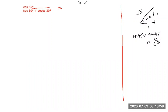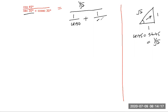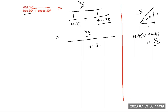So it's 1/√2 divided by (sec 30 plus cosec 30). Secant 30 is 1 by cos 30. Cosecant 30 is the reciprocal of sin 30. Sin 30 is 1/2, so cosec 30 equals 2. Cos 30 is √3/2, so sec 30 equals 2/√3. You can always derive these values from the basic ones.